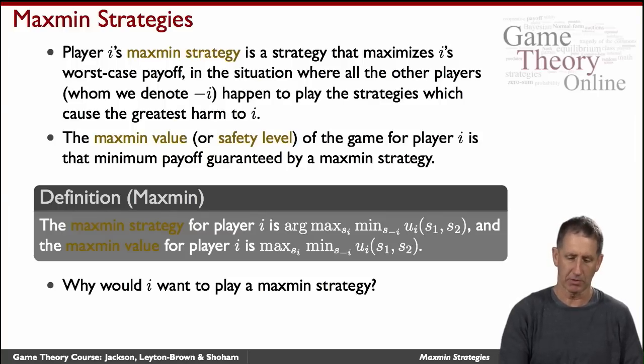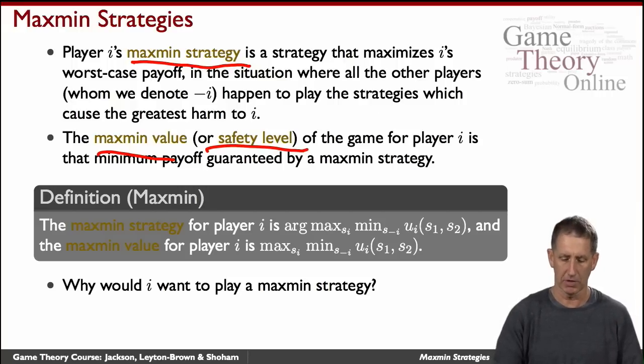The maxmin strategy is a strategy that maximizes my worst-case outcome, and my maxmin value or safety level is that payoff that's guaranteed by the maxmin strategy. And here it is defined formally. The maxmin strategy for player i is the strategy S1 that maximizes the minimum that the other player, remember the minus i is the player other than i, would hold player i down to.